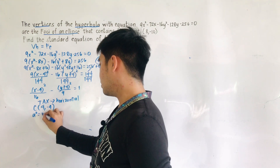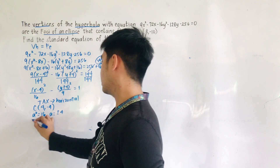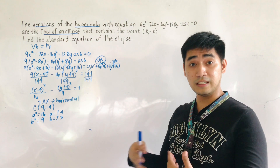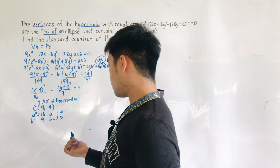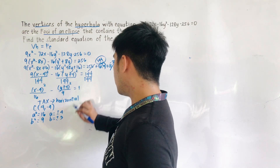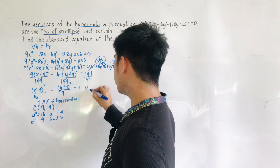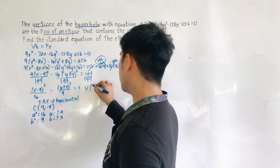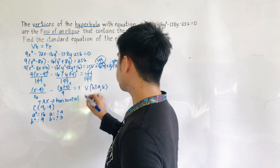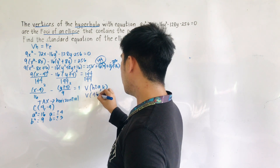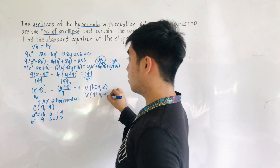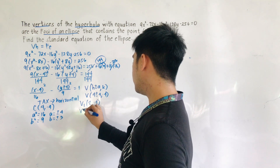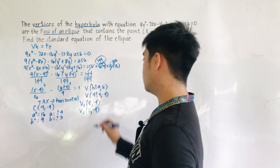Therefore, a² equals 16, so a equals plus or minus 4. And b² equals 9, so b equals plus or minus 3. We will not get the value of c². For the vertices, since this is a horizontal transverse axis, we change the x-coordinate of the center. The vertices are at (h plus or minus a, k), so (4 plus or minus 4, negative 4). Therefore, V1 is (8, negative 4) and V2 is (0, negative 4).